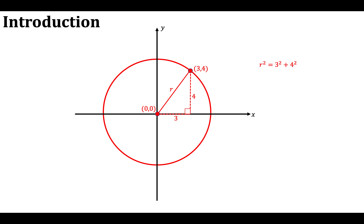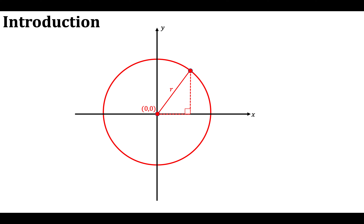Since it's a right angle triangle I can use Pythagoras' theorem, which means the hypotenuse squared — that's R squared — is equal to the sum of the squares of the two shorter sides, so that's 3 squared plus 4 squared. In this case R squared equals 25, and therefore the radius is 5. So we've been able to work out the radius of that circle given a point on the circumference.